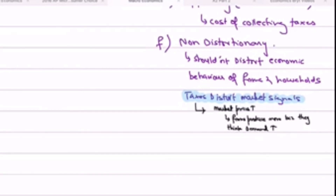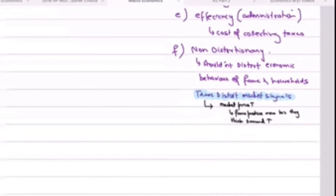Distortion means that a process that normally runs smoothly gets an element that disrupts it. This is what taxes can do at times — they distort economic decisions. That is why we say taxes should be non-distortionary.